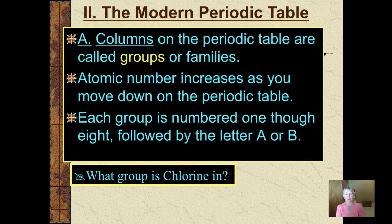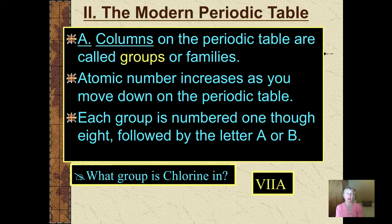So for example, if I was to ask you what group is chlorine in, using an older system, you would say Roman numeral 7A. Using the modern periodic table method with Arabic numbers, you would say chlorine is in group 17.